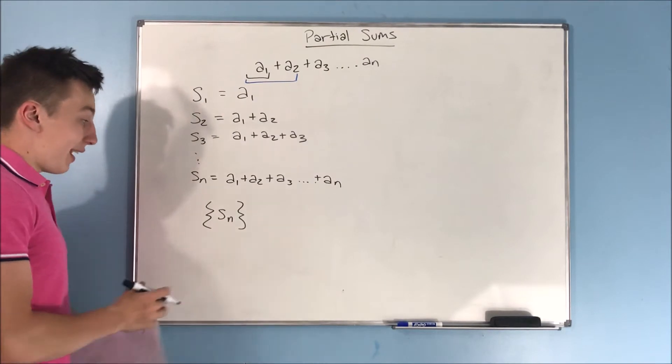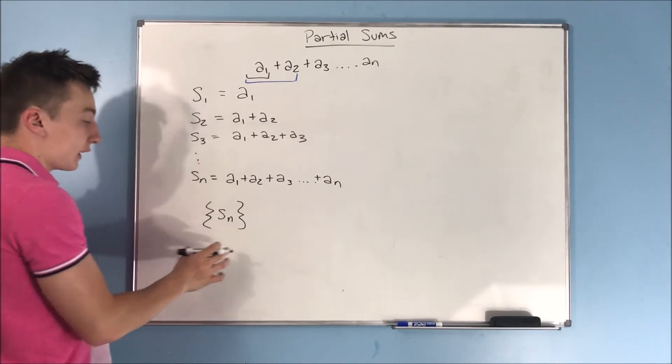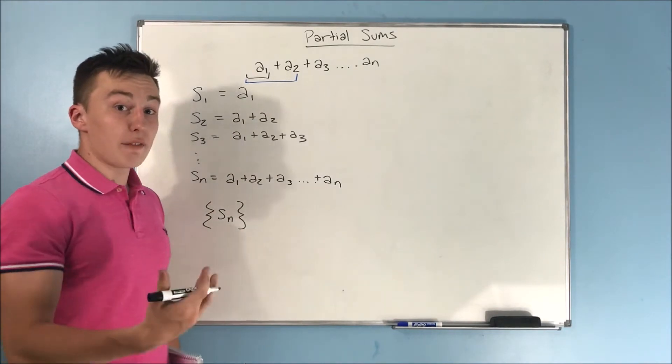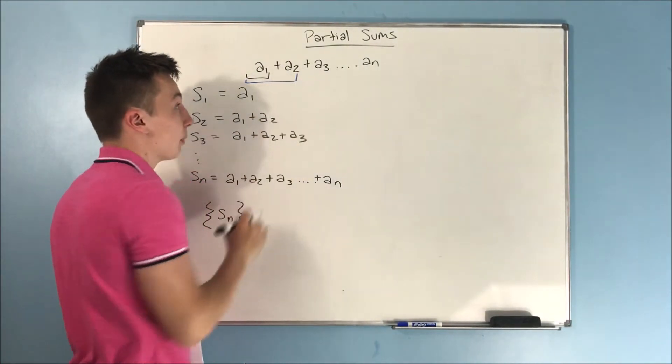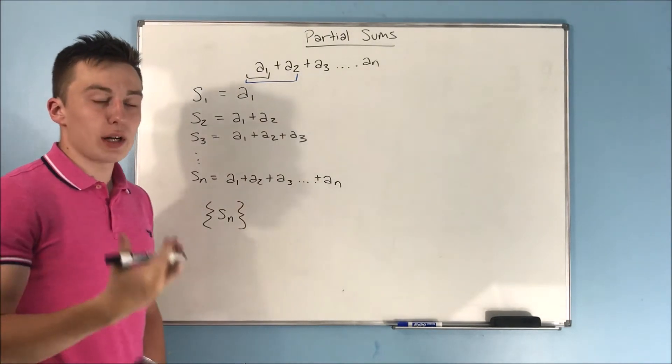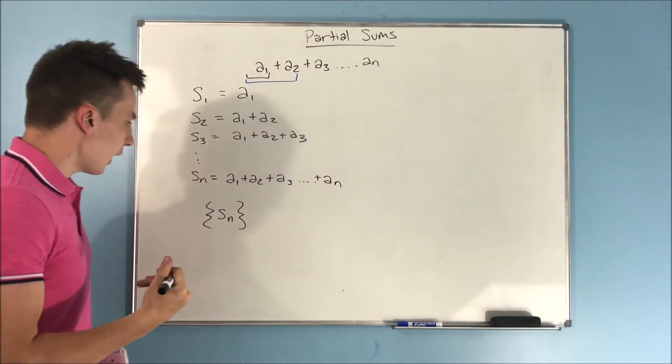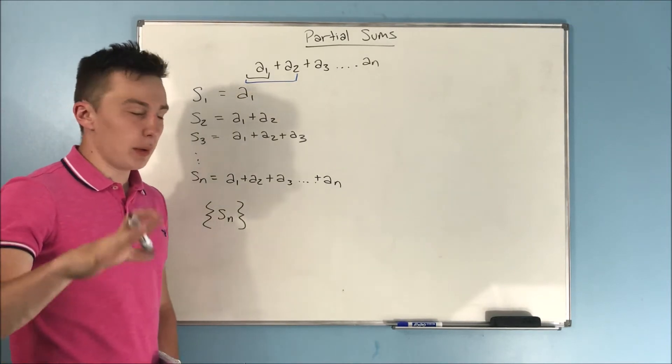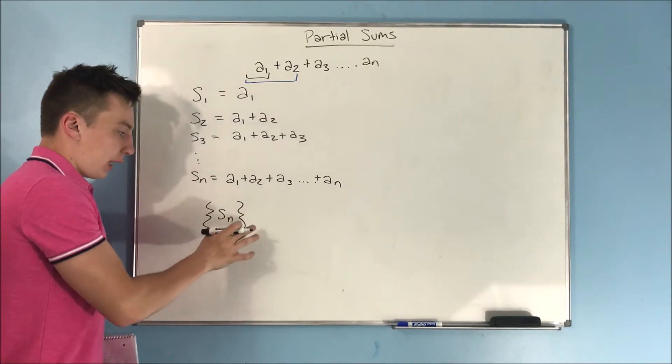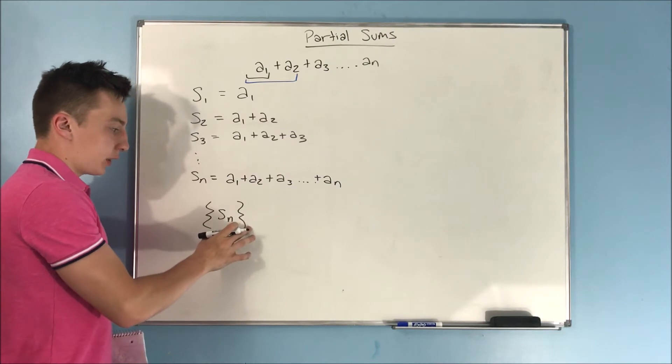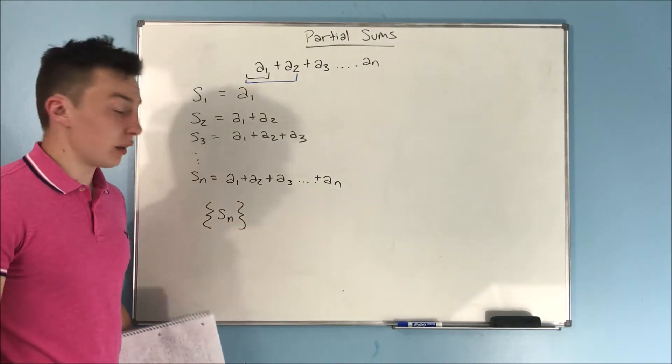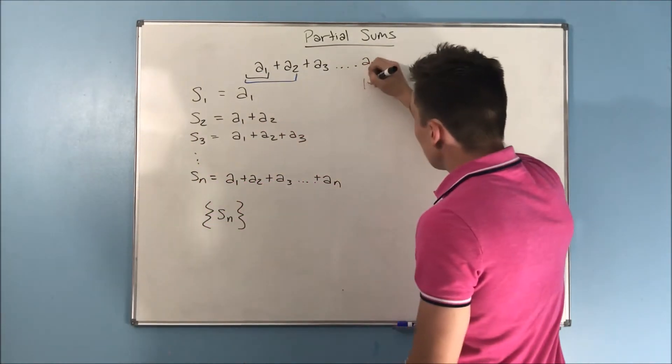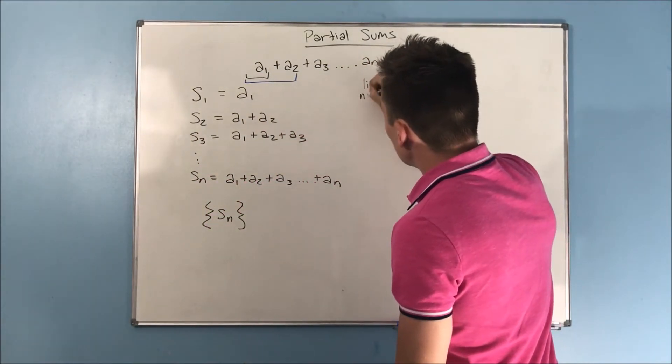So now we can see if this sequence converges or diverges, and that'll tell us if this series up here will converge or diverge. And how do we prove if this converges or diverges? Well, we just learned that. We just learned that in sequences, we take a limit as n approaches infinity.